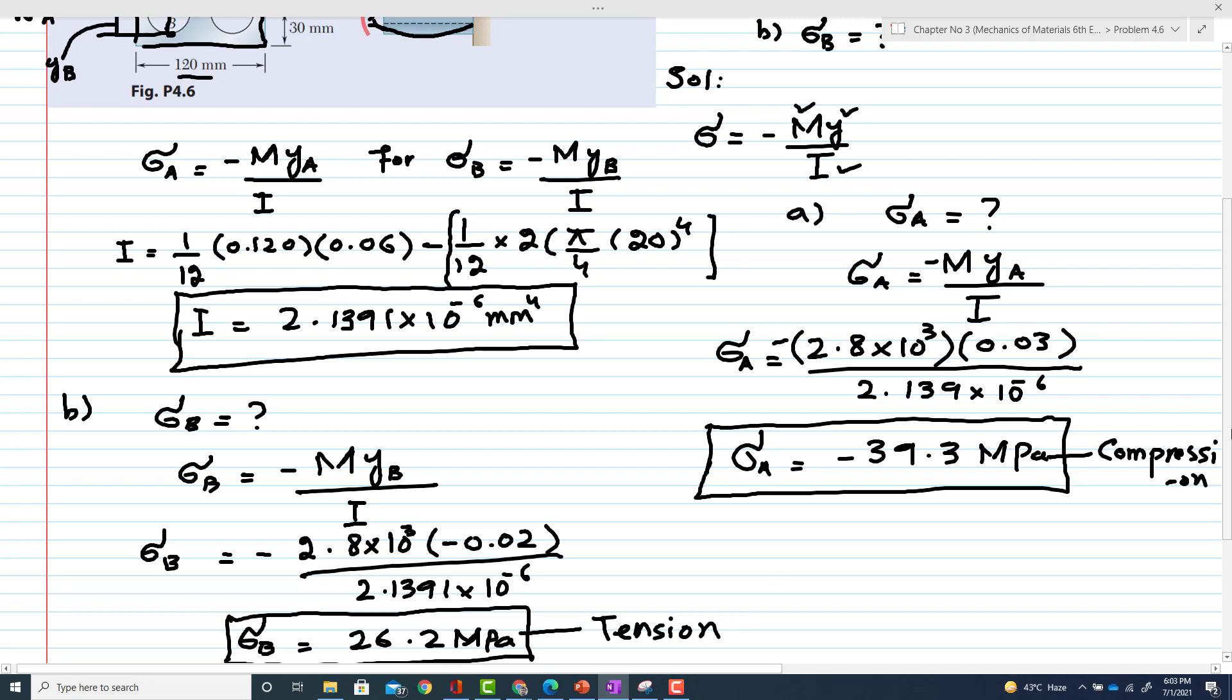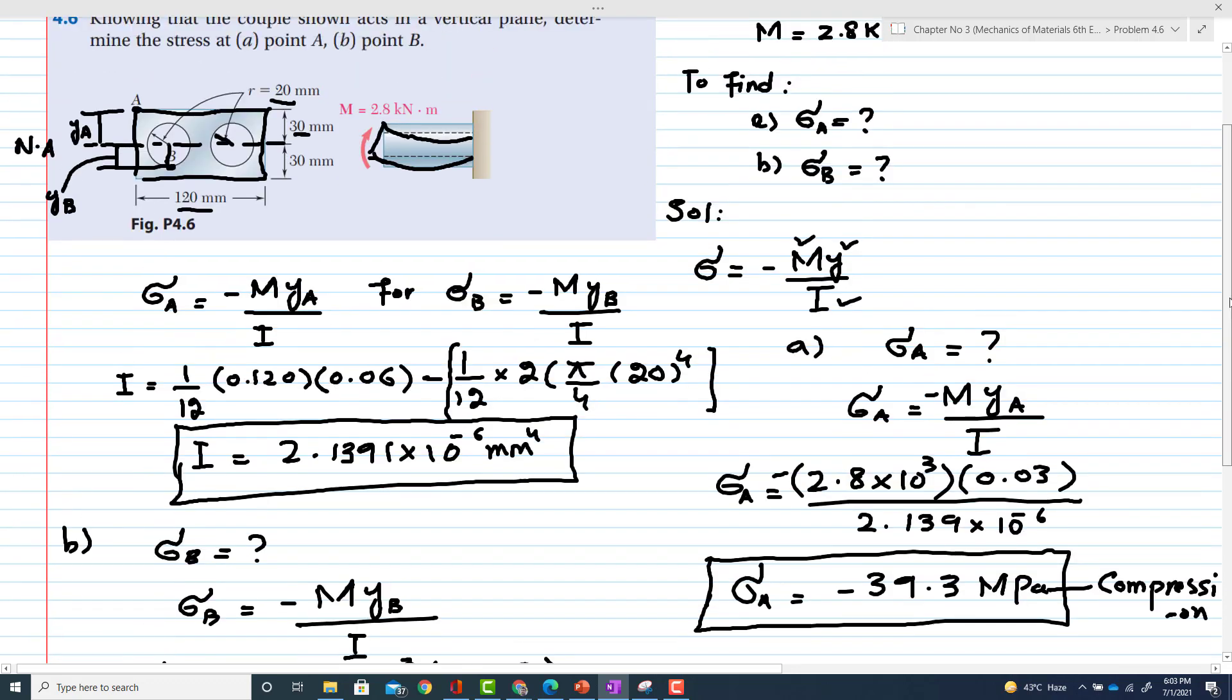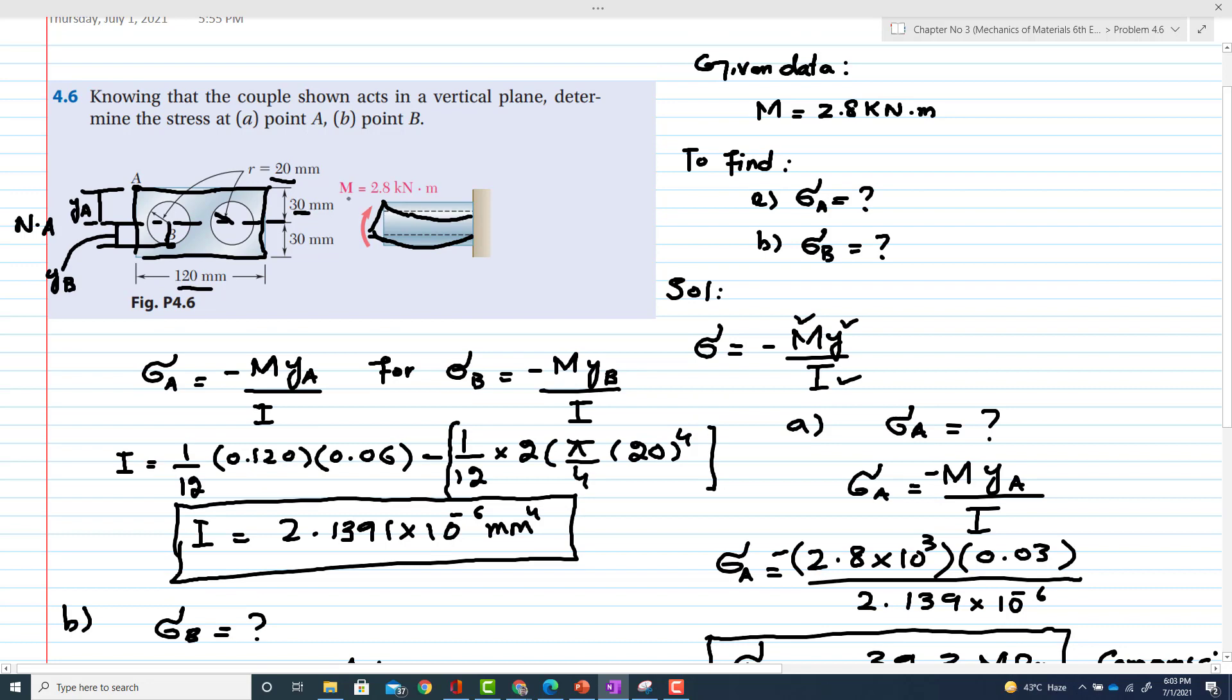I will show you: if you recall the previous concept, whenever a beam is under bending moment, the points at concave portion are under tension. Point B will lie over here and point A lies over here. So this point B is in tension while point A is in compression.